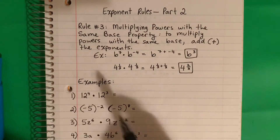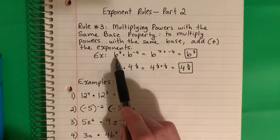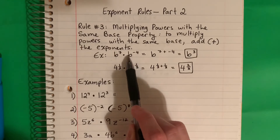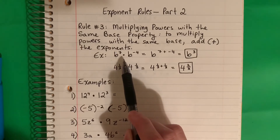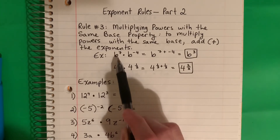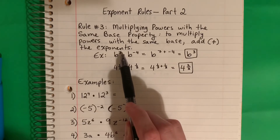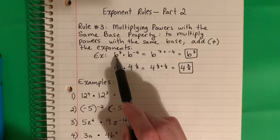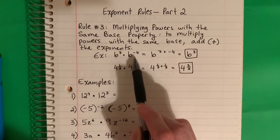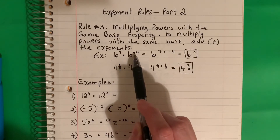Here's an example. I have the same base — remember, the base is the big number or letter. Aquí tengo los bases. Recuerda, los bases son las letras grandes o los números grandes en frente de los exponentes. The base is in front of the exponent. My base here is B and B, and my exponents are 7 and negative 4.